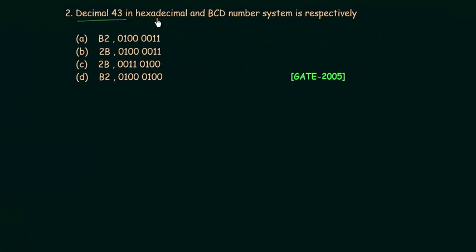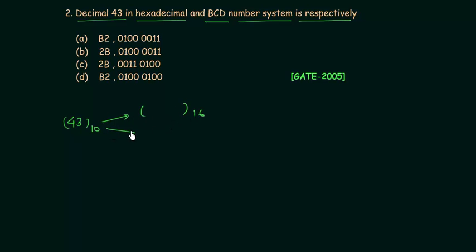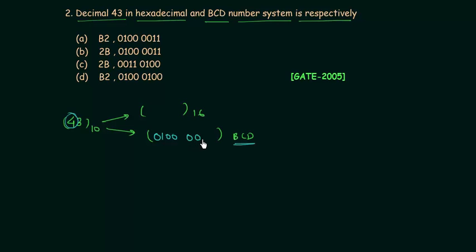Decimal 43 in hexadecimal and binary coded decimal (BCD) — what are the representations respectively? We need to convert 43 decimal to hexadecimal and to BCD. For BCD, we convert each digit separately: 4 is represented as 0100, and 3 is represented as 0011. So the BCD representation of 43 is 0100 0011.